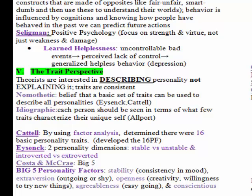There are two approaches within the trait perspective — the nomothetic approach and the ideographic approach — along with the theorists that fall under each. Cattell and Eysenck are relatively self-explanatory and probably won't be as heavily tested as the Big Five.